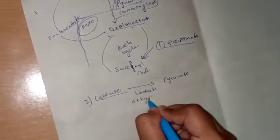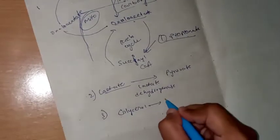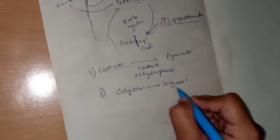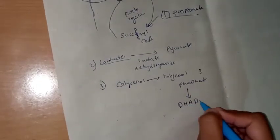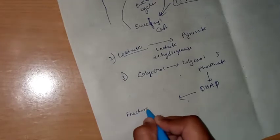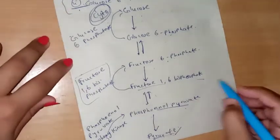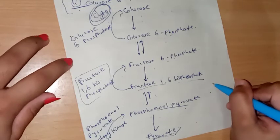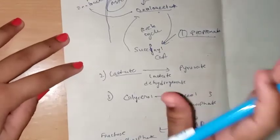Glycerol is converted to glycerol-3-phosphate, which is then converted to DHAP (dihydroxyacetone phosphate), and DHAP is converted back to fructose-1,6-bisphosphate, entering the gluconeogenesis pathway. This completes the overview of the gluconeogenesis process.